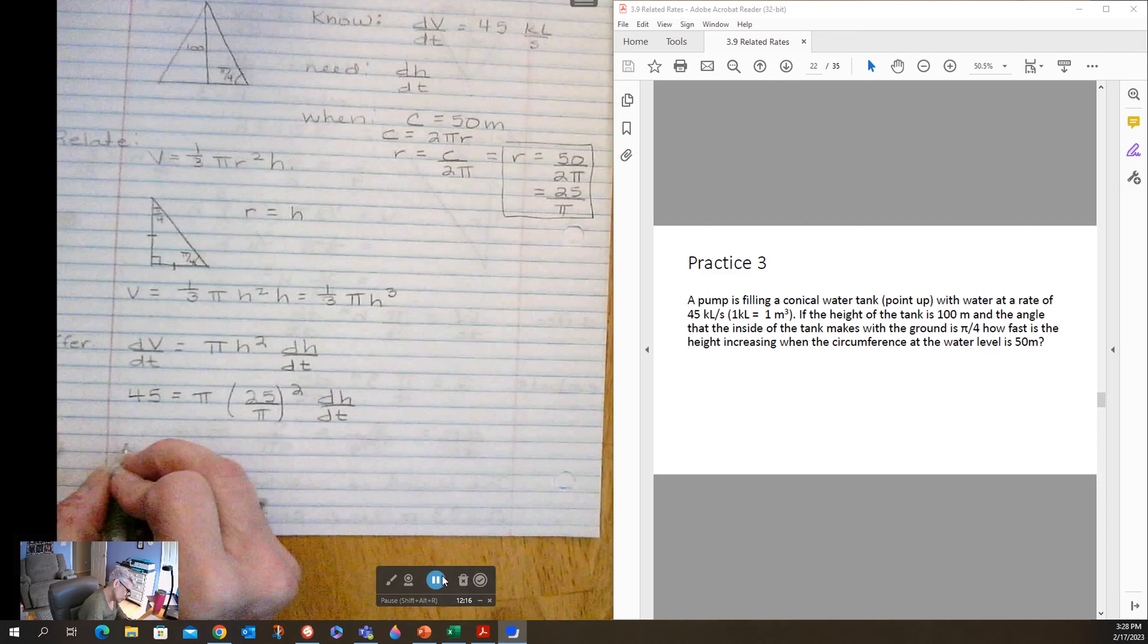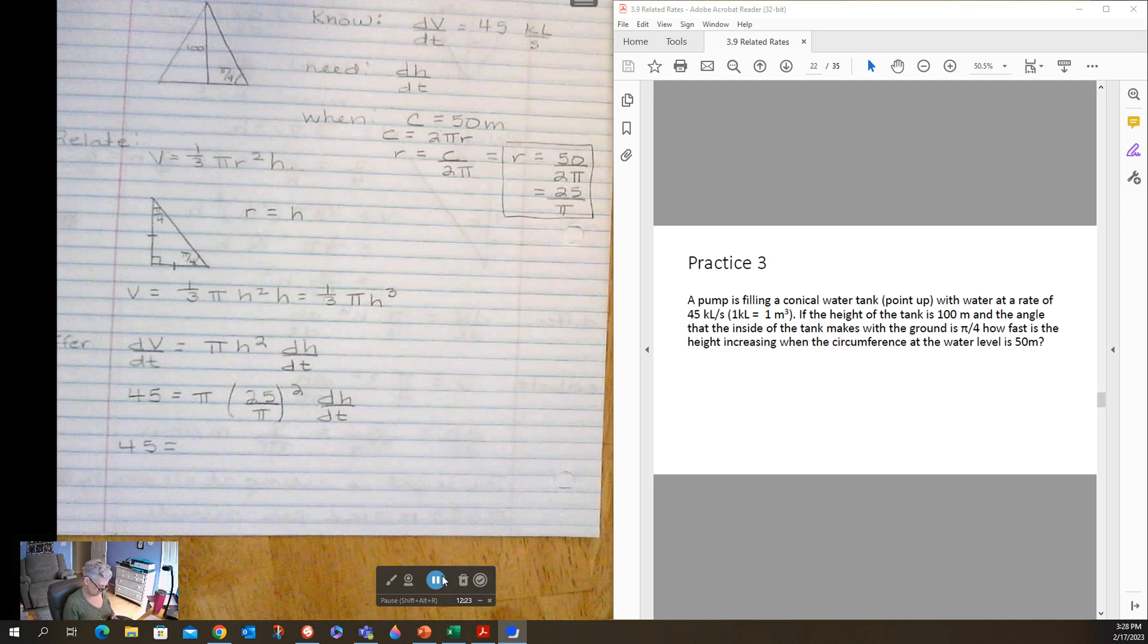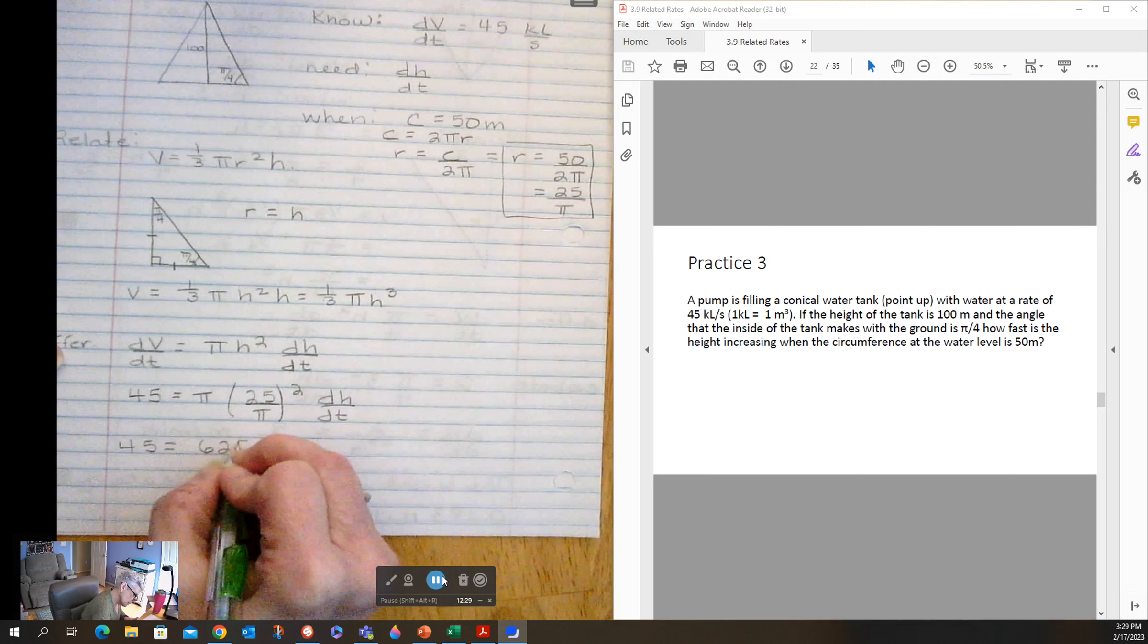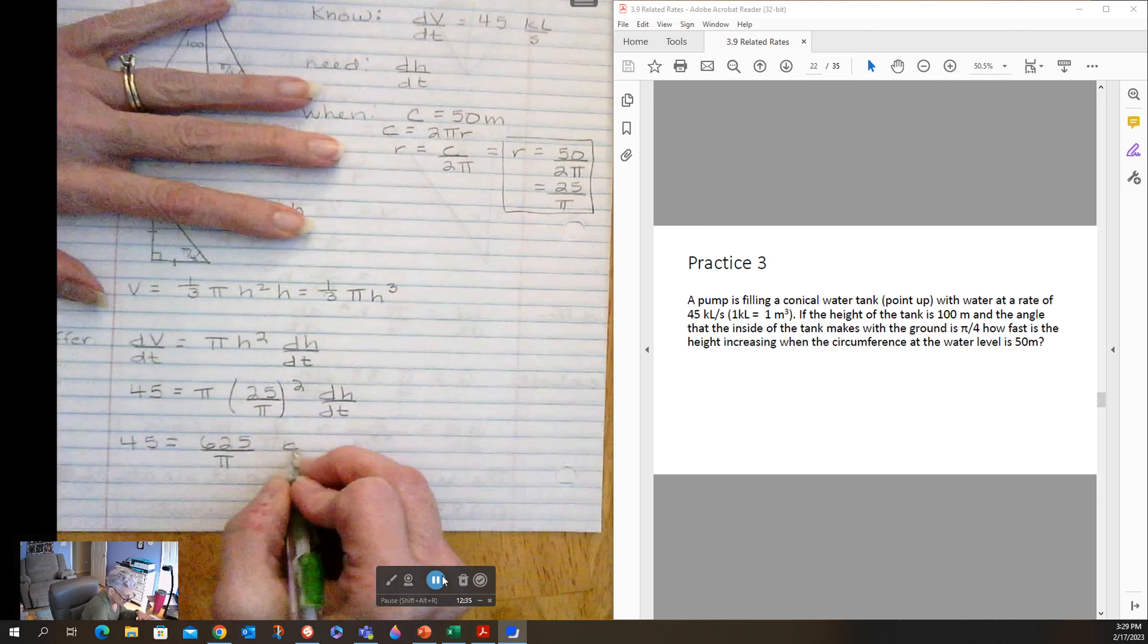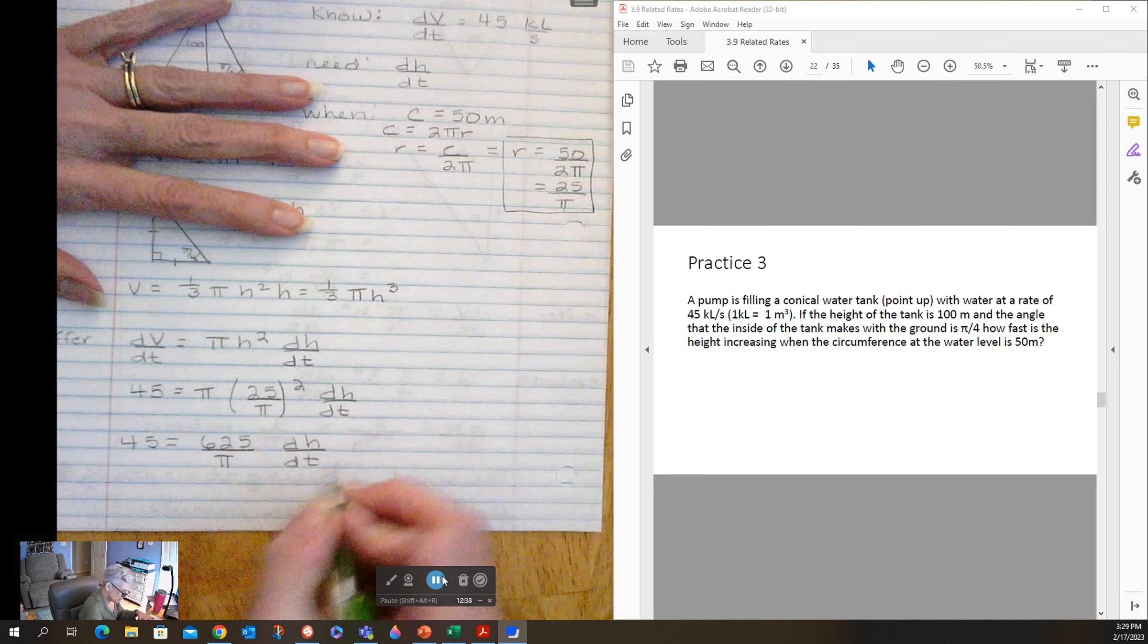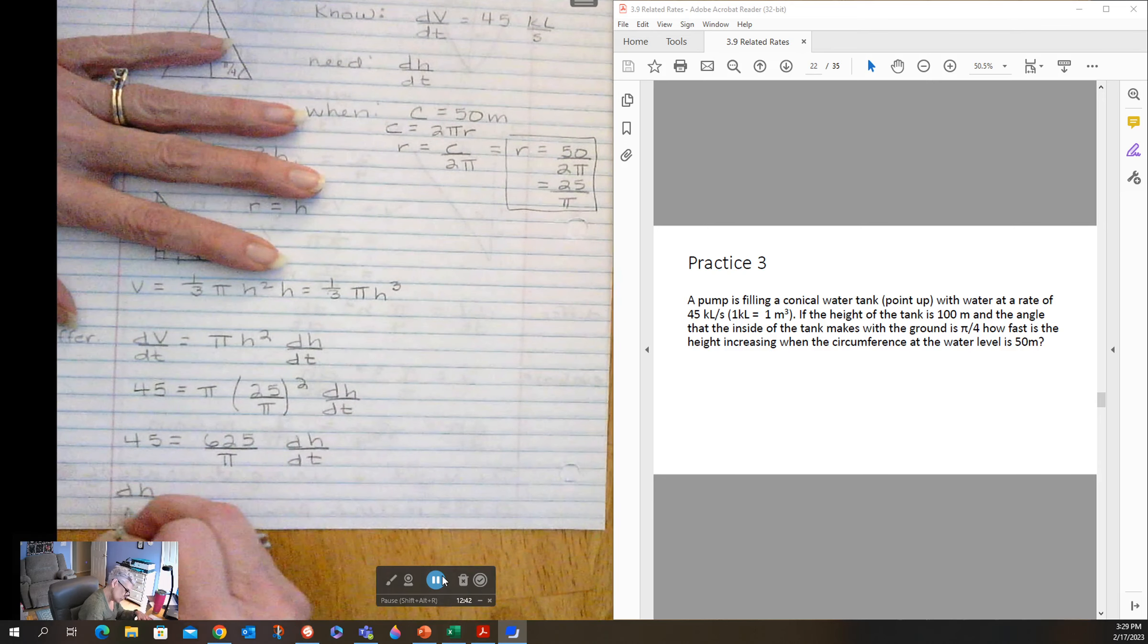So 45 equals 25 squared—I think it's 625, it is, yay I remembered. And I have pi over pi squared; that leaves me with one pi down below. So there's dH/dt. So dH/dt is equal to 45 over 625 pi.